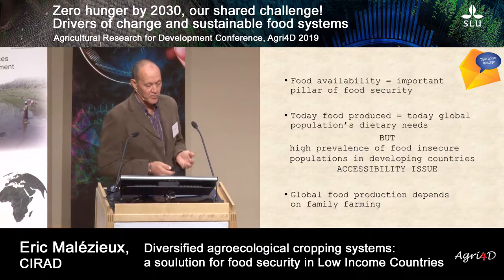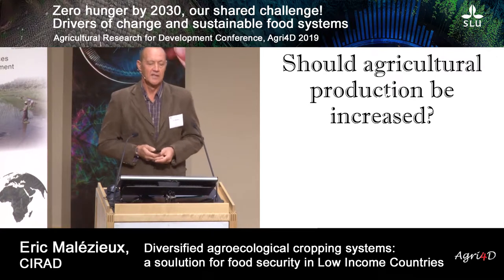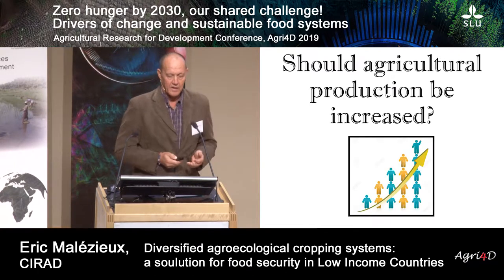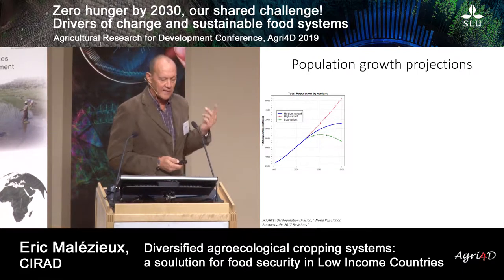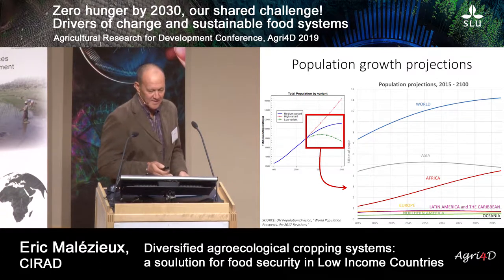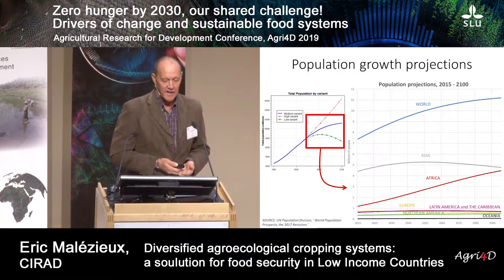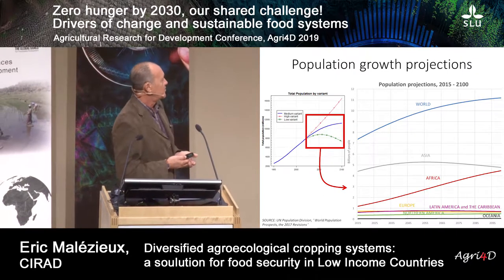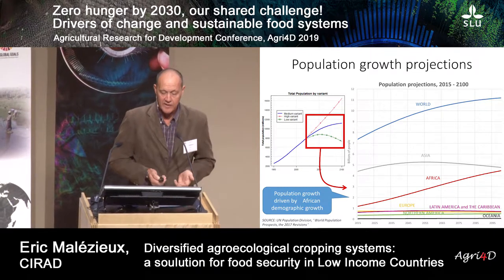The global food production depends on family farming and very small farms. The question we have now is: should agricultural production be increased in the next decades, and how can we do that? Looking at population growth projections, you see that Asia will peak in population in 2050, but Africa will still grow a lot — roughly doubling its population by 2050. So world population growth will be driven by African demographic growth in the next decades.